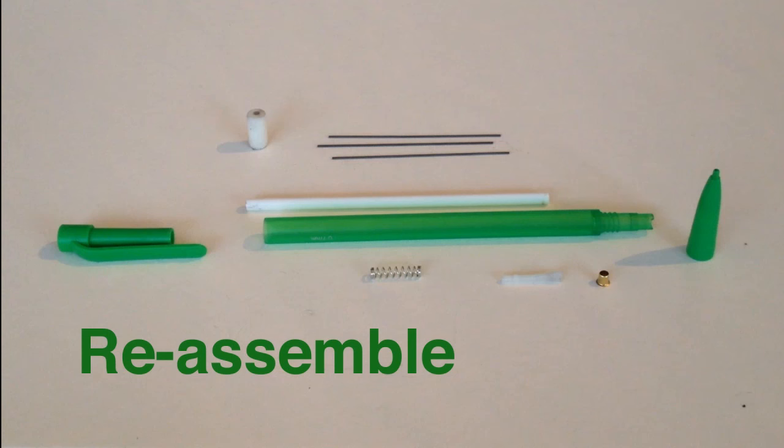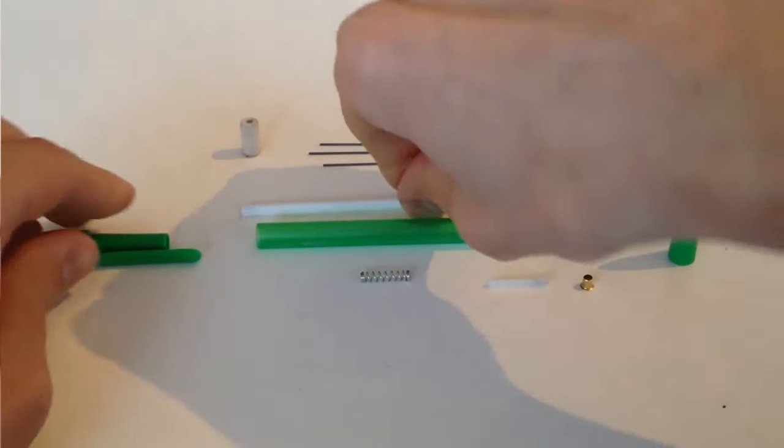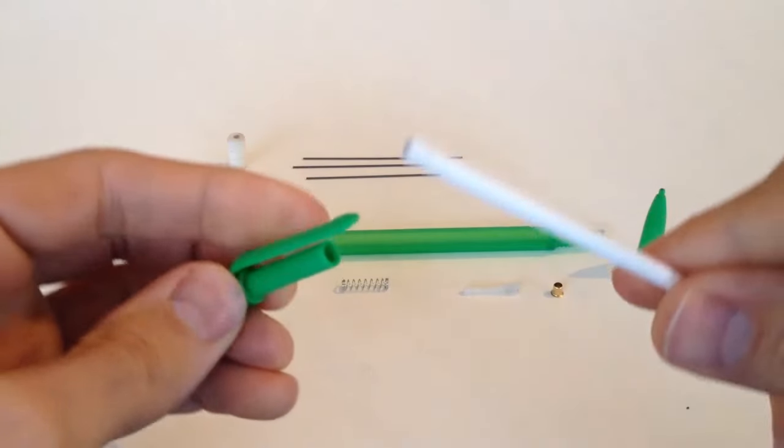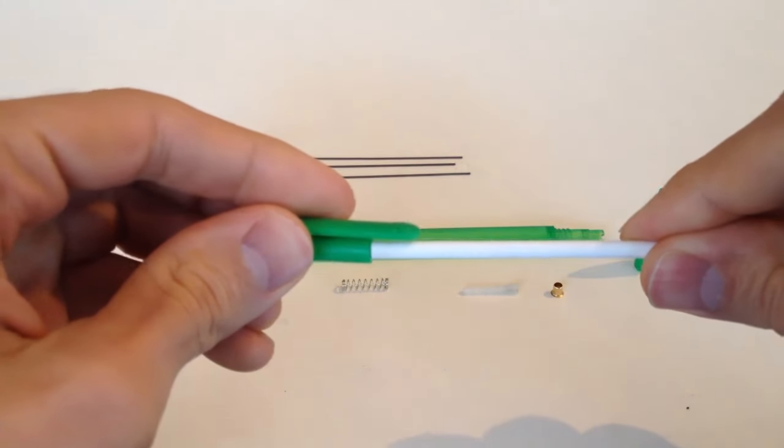This video will show you how to reassemble the mechanical pencil. First, connect the lead reservoir tube with the lead advance unit by inserting it into the thrust tube end.